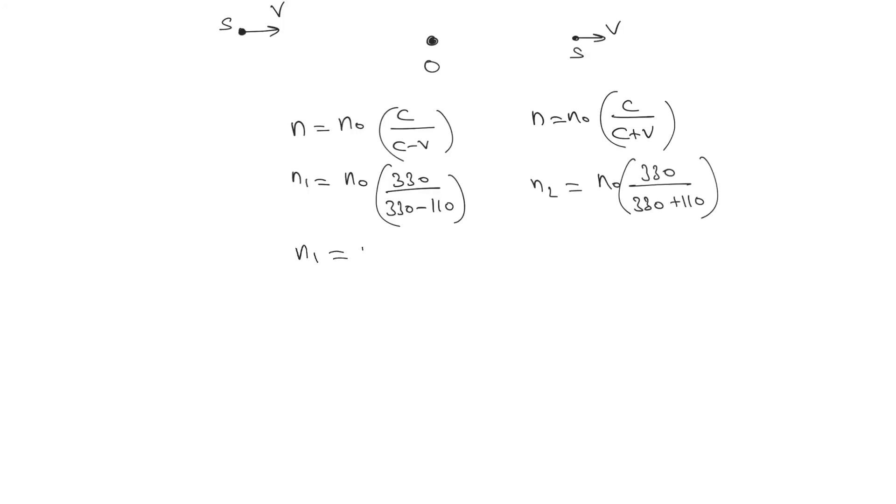So the value of n1 equals n0 times 330 divided by 220, and n2 can be written as n0 times 330 divided by 440.